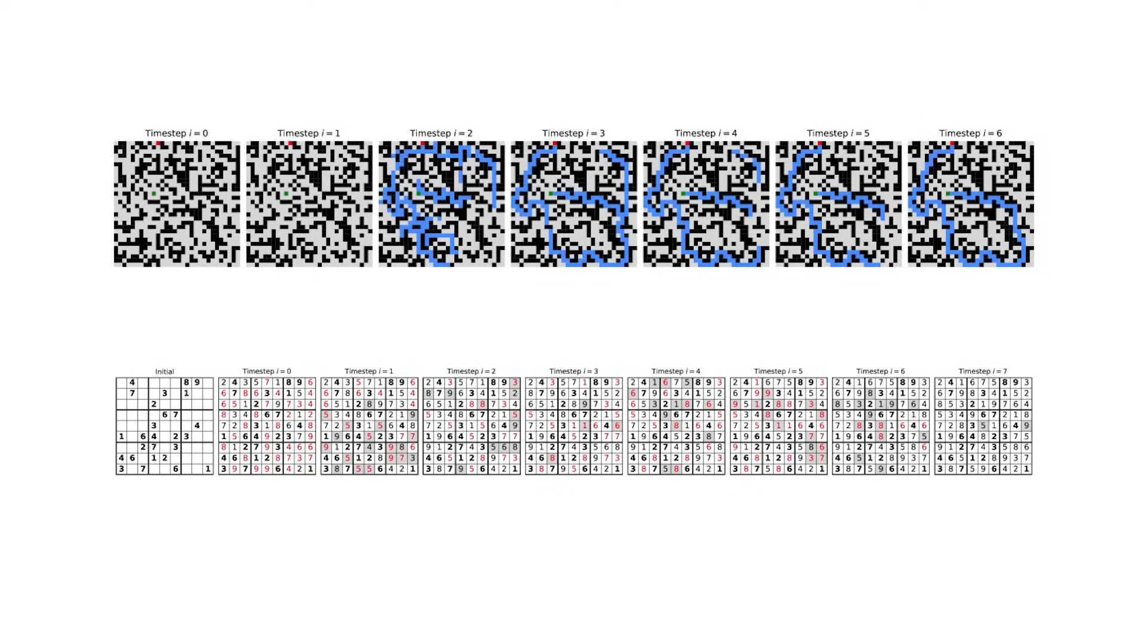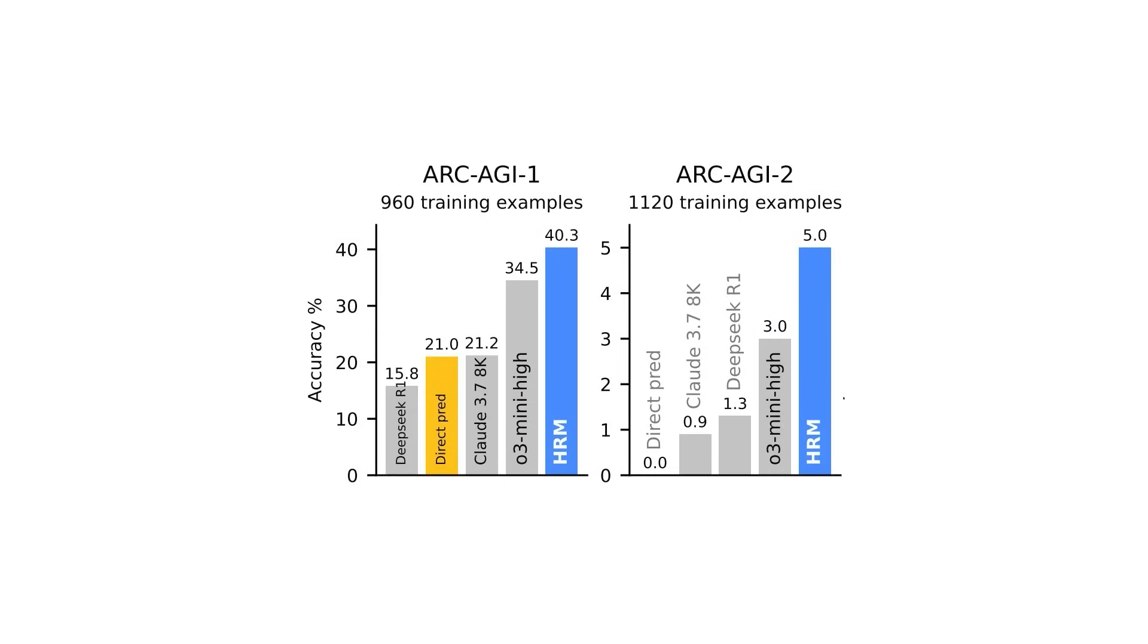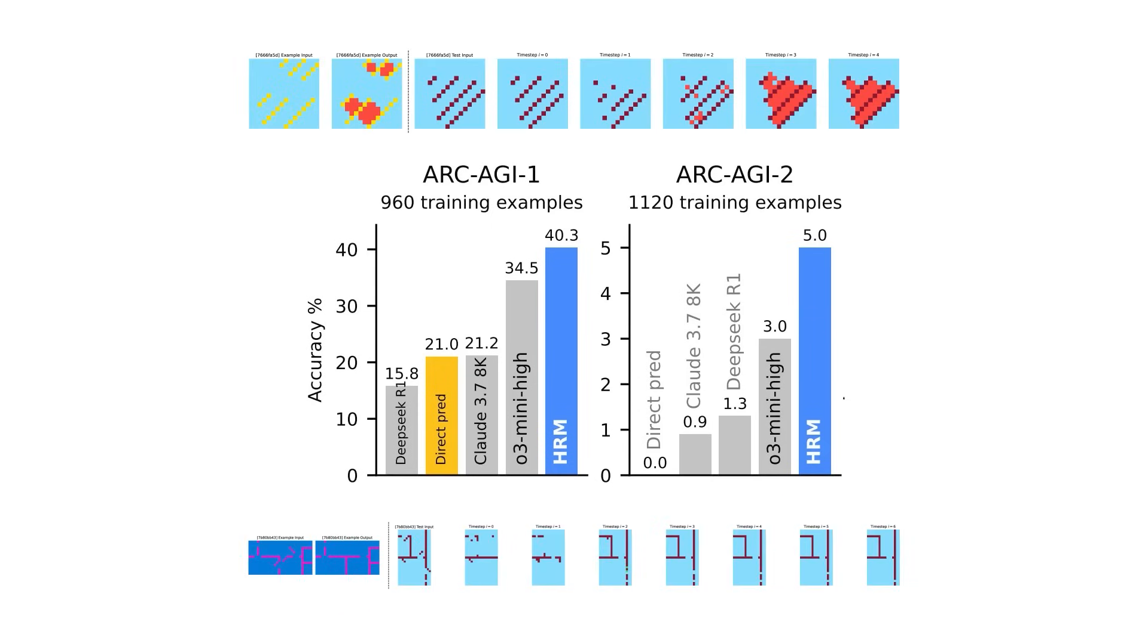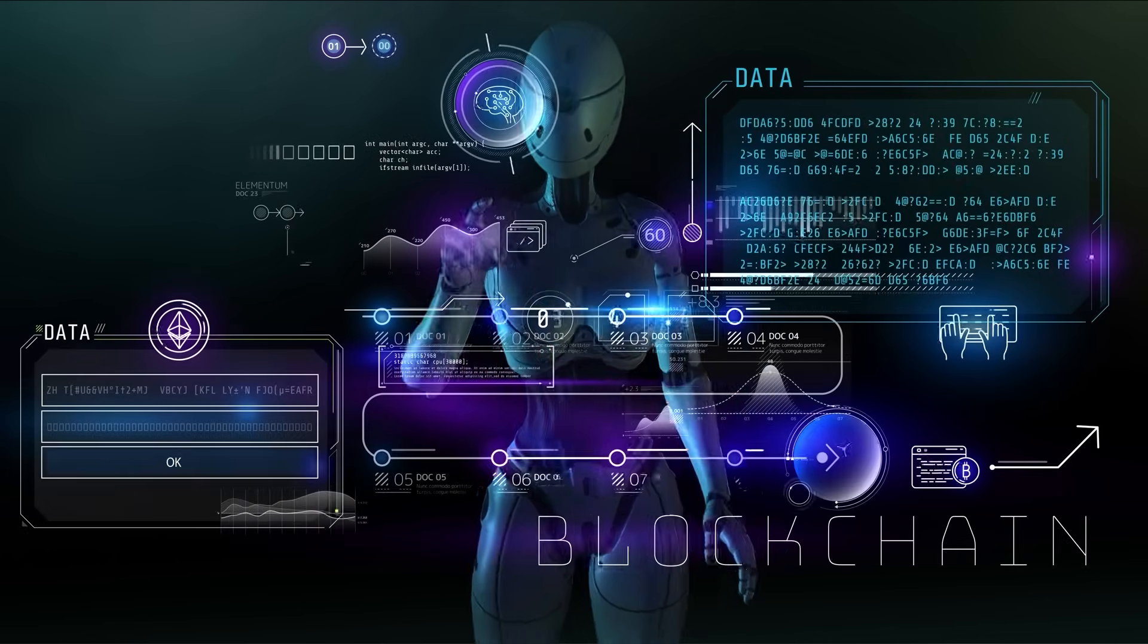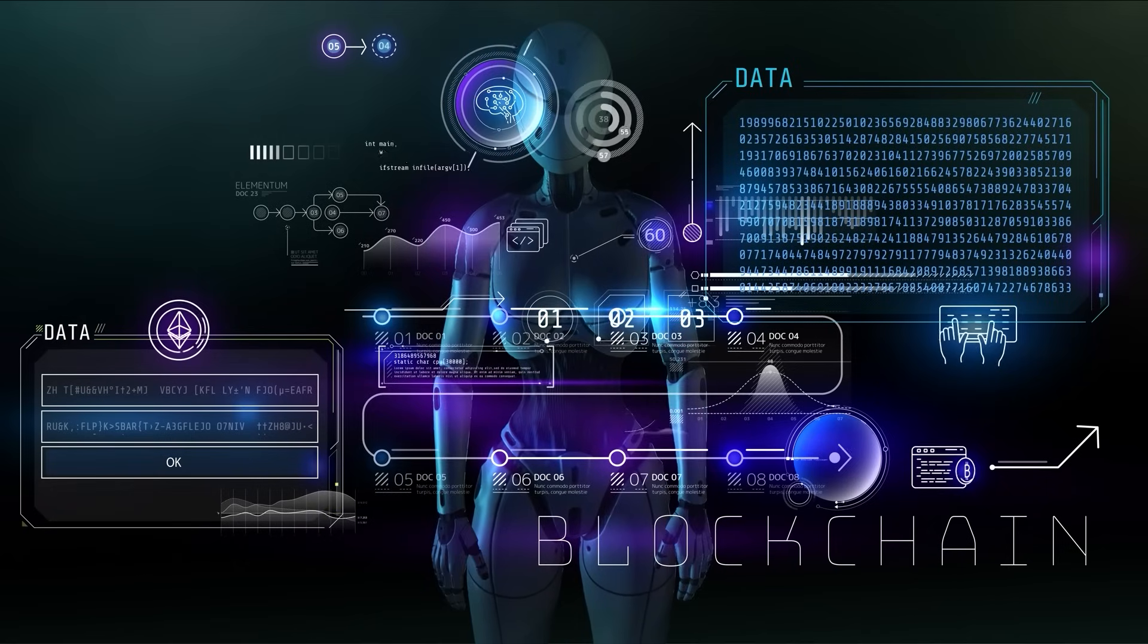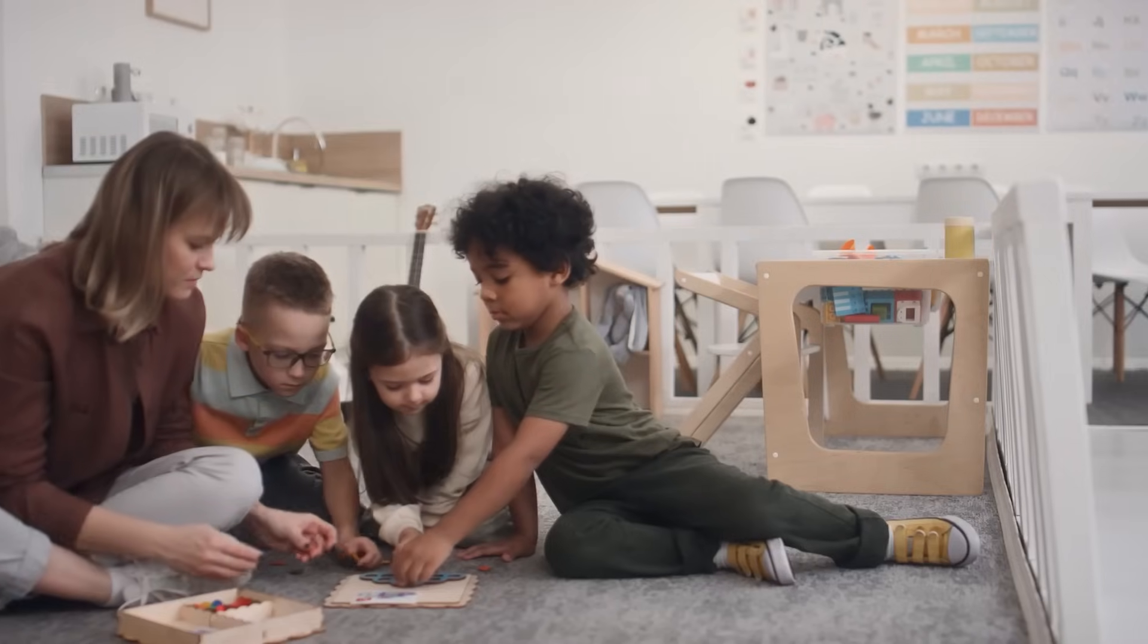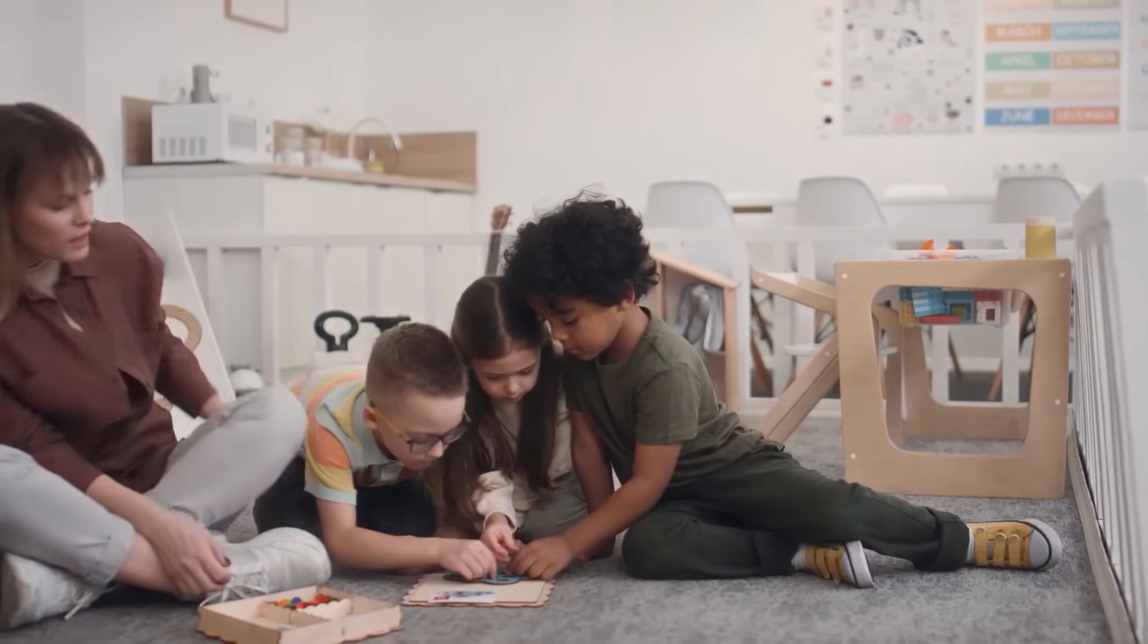This model is just 27 million parameters and is able to solve extreme Sudoku puzzles and difficult mazes while every other frontier model scores zero on these benchmarks. It even outperforms O3 and Claude 3.7 on both ArcGi 1 and 2, while being thousands of times smaller. Moreover, the model learns to solve problems not by training on trillions of tokens, but by just looking at a thousand examples. In fact, this architecture skips pre-training altogether. And that's much more like how humans learn. We just need a limited number of examples to learn a new skill.